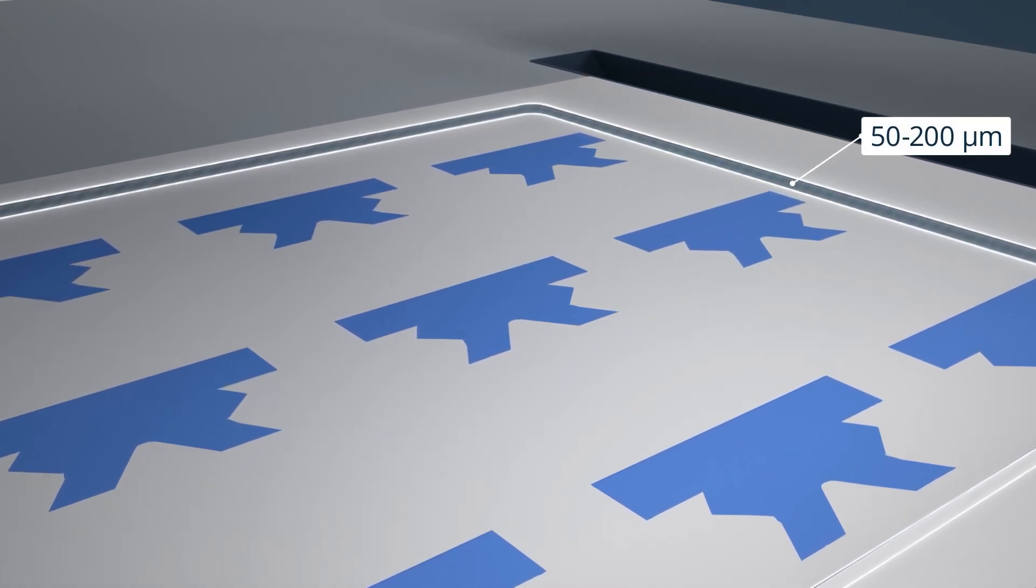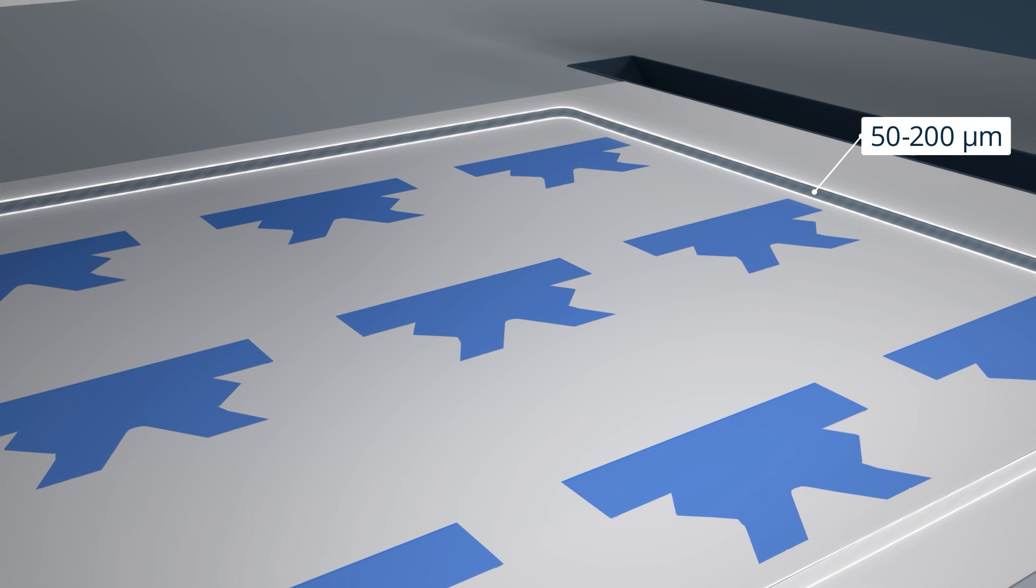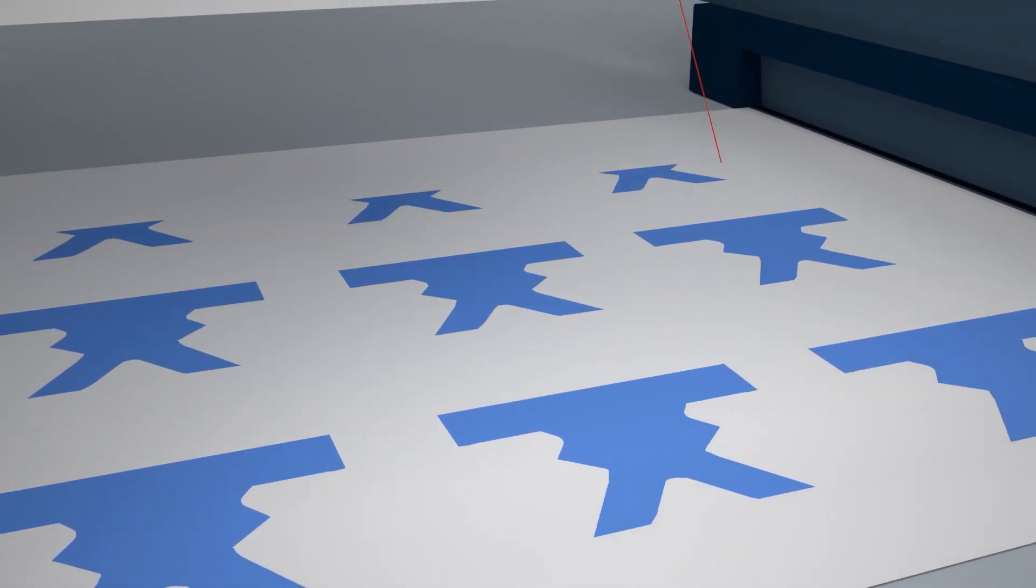The build platform moves down by one layer into the build chamber, typically about 200 microns. The process repeats until the parts are complete.